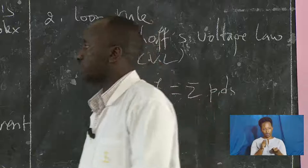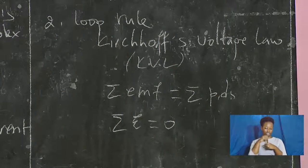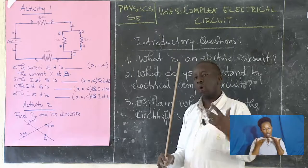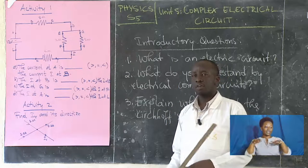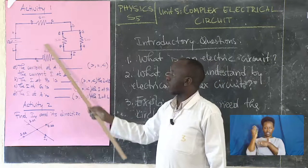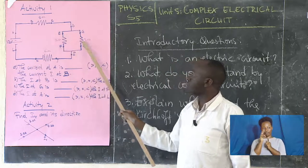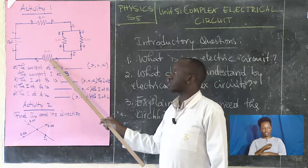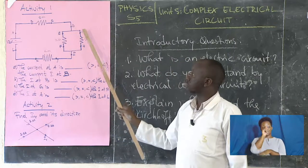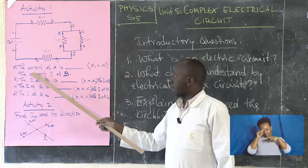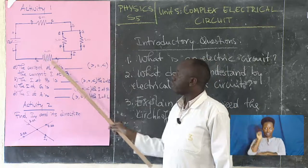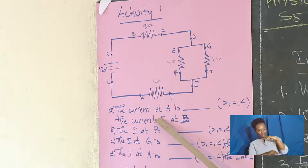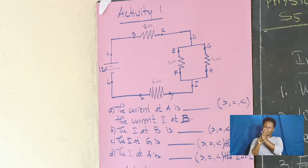Let's change this explanation into the activity. Activity number one is about recalling how current may now be equal according to where it is passing or coming from. In the circuit diagram we have 12 volts, 8 ohms, 5 ohms, 3 ohms connected in parallel, and a 6 ohm resistor. The question is to use this diagram and answer: is the current at point A greater than, equal to, or less than the current at point B?